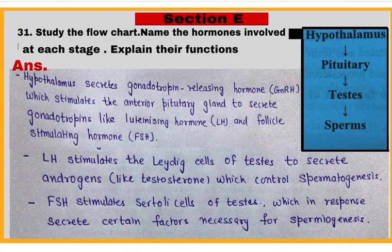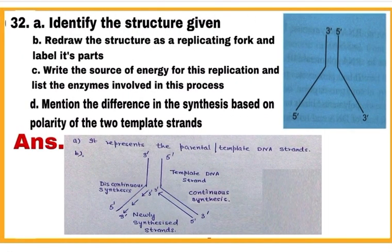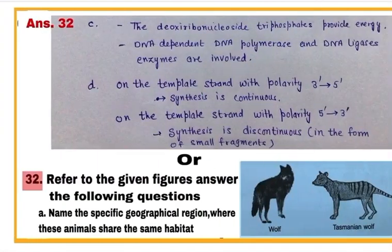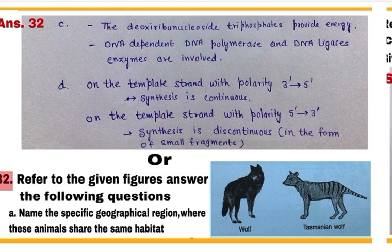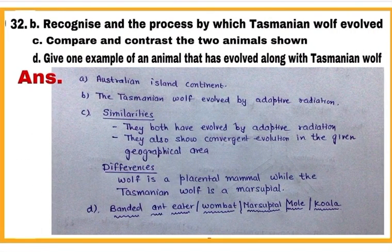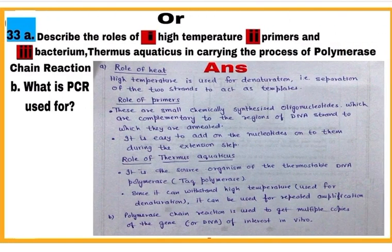The last section of the paper is Section E. It has 3 questions of 5 marks each. There is a choice in question numbers 31 and 32, along with the answers of question number 32. This is question number 33, and there is also a choice in question number 33.